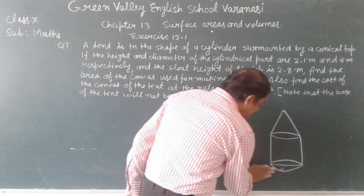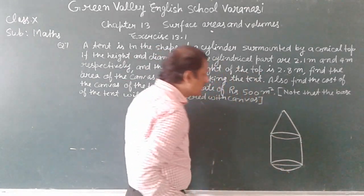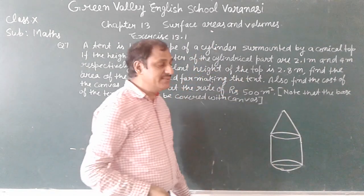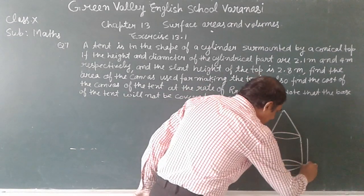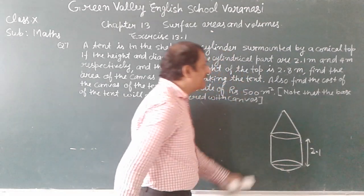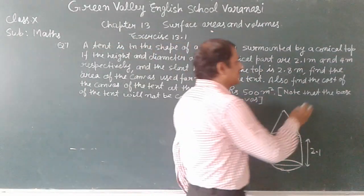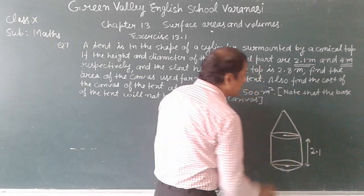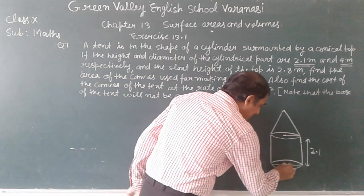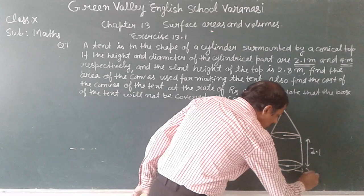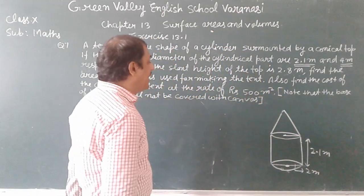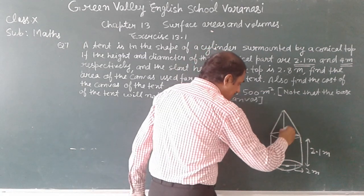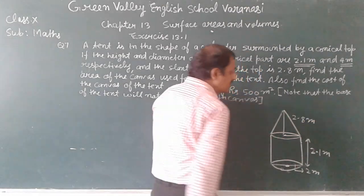In this question, the height and diameter of the cylindrical part are given. The height of the cylindrical part is 2.1 meter, and the diameter is 4 meter. Since the diameter is 4 meter, the radius will be half of that, so the radius is 2 meter. And the slant height of the conical top is 2.8 meter.